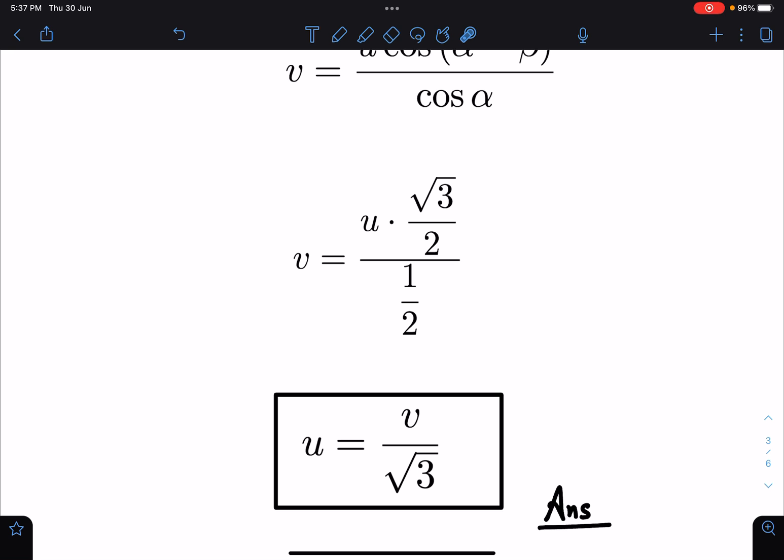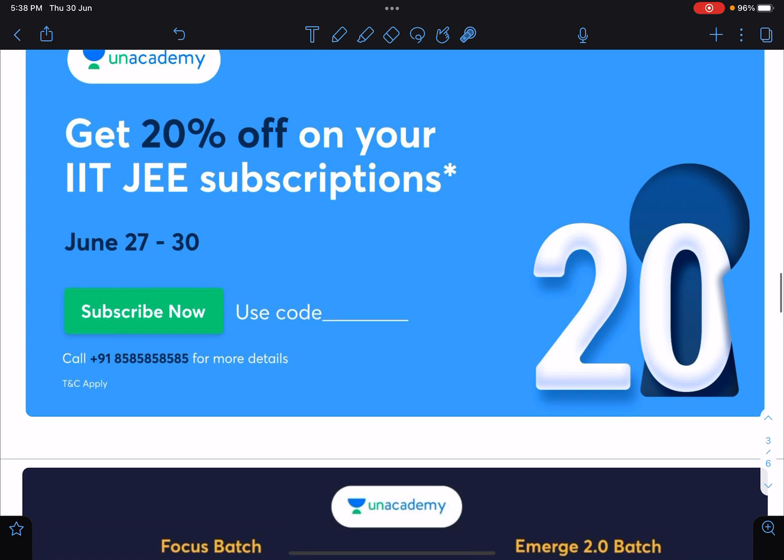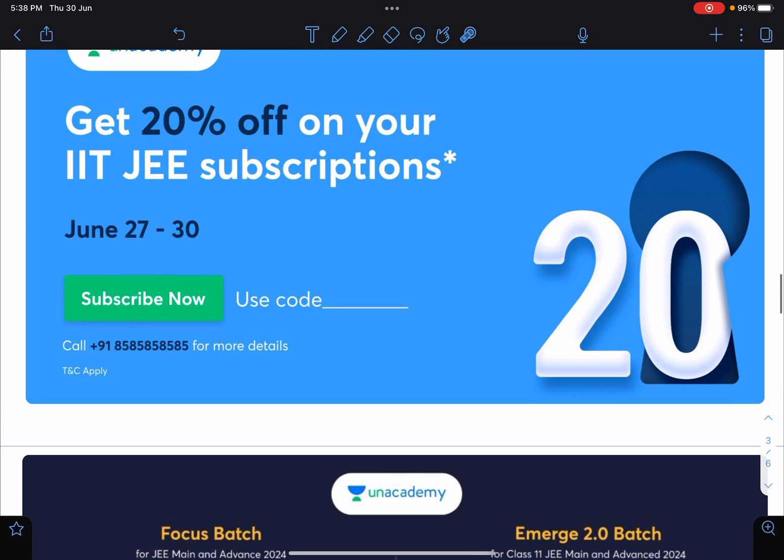Guys, today is the last day for this 20% off on your subscription for JEE. You can use my code NITANsir if you want to connect with me on Unacademy. On 4th of July we will be starting the final round of Advanced preparation with my Advanced course where we will be solving amazing problems of physics which will help boost your preparation.